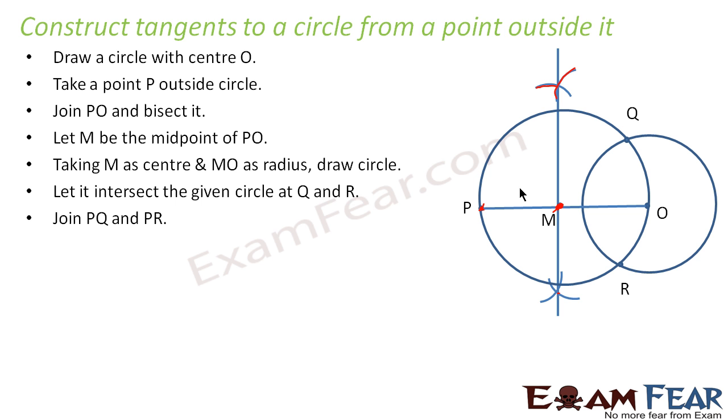Now what we do is, we have to join PQ and PR. So let us join PQ and PR. So we have joined PQ and PR. And now you see PQ and PR are the required tangents.